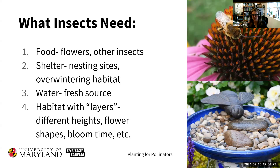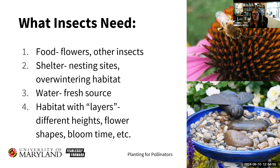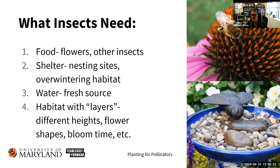Insects often need a landing space near water — providing a bowl full of marbles and water or rocks like a little bird bath gives them better accessibility to a freshwater source. Then there's habitat with layers: planting things with different heights, different flower shapes, and different bloom times. Just planting one species of native plant is a great start, but it doesn't provide season-long food. Many pollinators are specialists tied to a certain group or even a single species of plant, so to attract a wide variety of insects we need a wide variety of plants. Also, the freshwater source should be cleaned regularly so you don't build up mosquito breeding habitat.